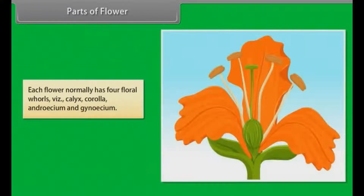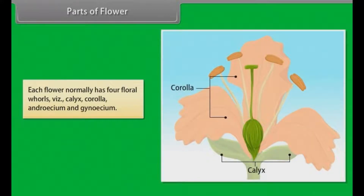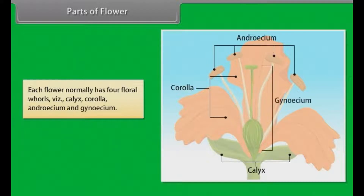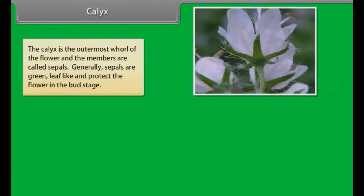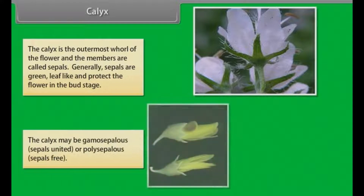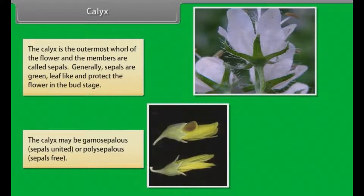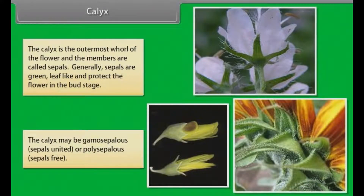Parts of flower. Each flower normally has four floral whorls: calyx, corolla, androecium and gynoecium. The calyx is the outermost whorl of the flower and the members are called sepals. Generally sepals are green, leaf-like, and protect the flower in the bud stage. The calyx may be gamosepalous — sepals united — or polysepalous — sepals free.